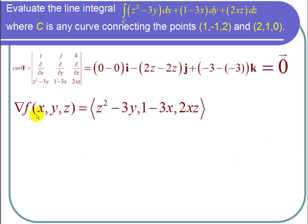The potential function has the property that the gradient of that potential function f is equal to the vector field. So I can say that del f over del x is equal to z squared minus 3y. So f is the integral of z squared minus 3y dx. So I integrate, the integral of z squared dx is xz squared.